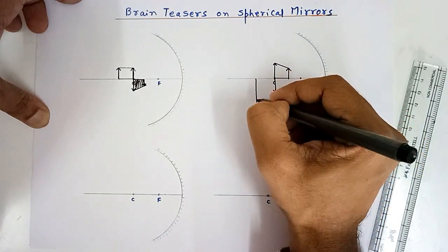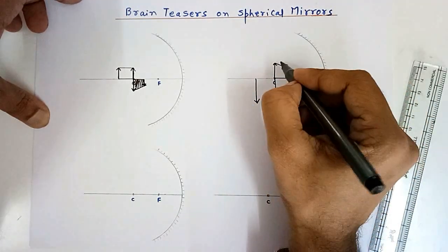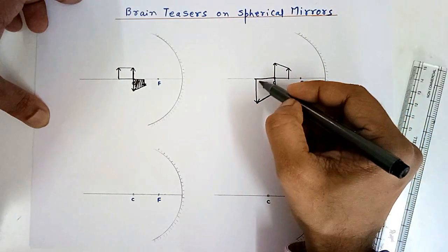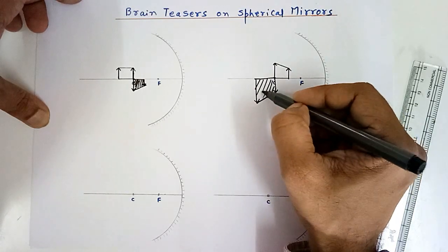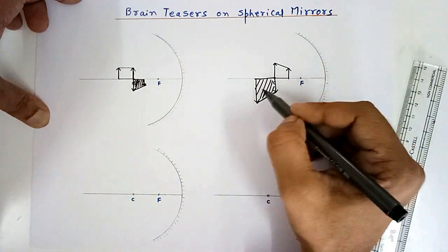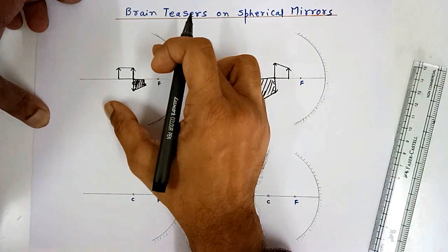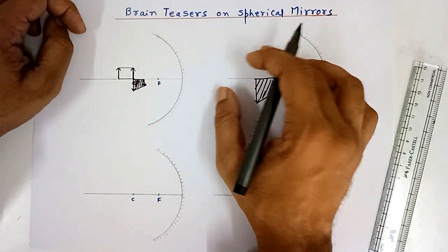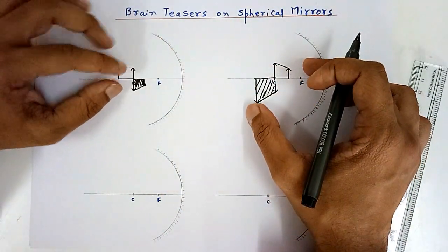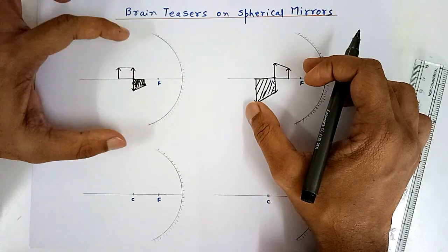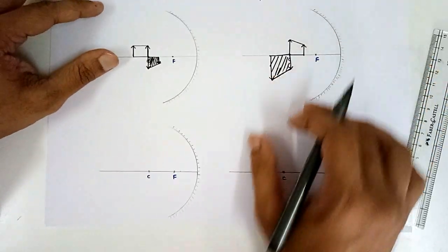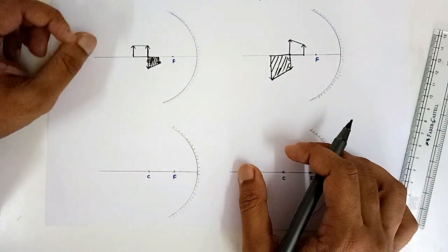So we can expect the image to look like this. If we join these two image parts, we get the image of this particular block. You can see that the area is magnified in one case and decreased in another. So areal magnification plays an important role — area decreases over here, area increases over here. Along with linear magnification, that means in terms of height, the area of the object also changes.